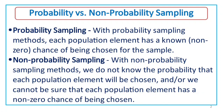This is Non-Probability Sampling. With Non-Probability Sampling Methods, we do not know the probability that each population element will be chosen, or we cannot be sure that each population element has a non-zero chance of being chosen.